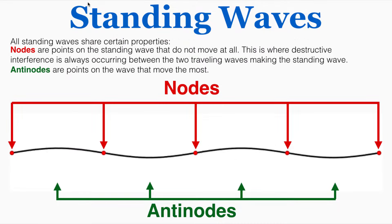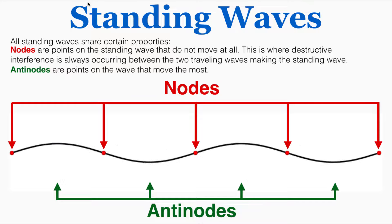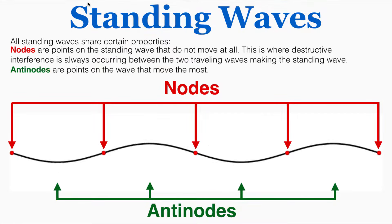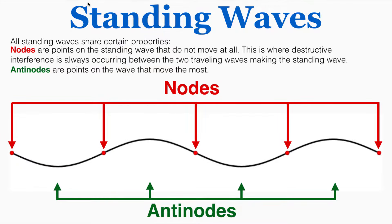All standing waves share certain properties. Nodes are points on the standing wave that do not move at all. This is where destructive interference is always occurring between the two traveling waves making up the standing wave. At every node, the two waves cancel each other out to produce a total amplitude of zero, so the material at the nodes does not oscillate up or down at all — it just stays in place.